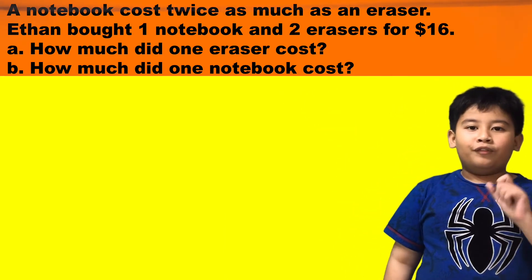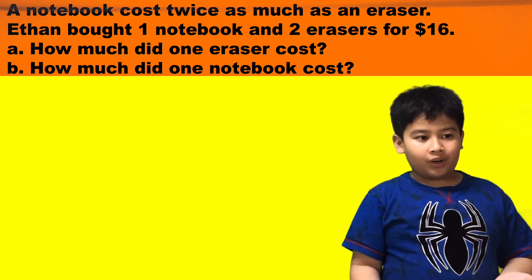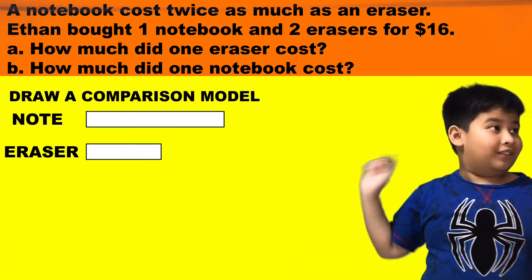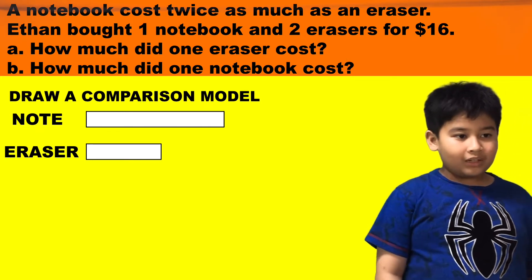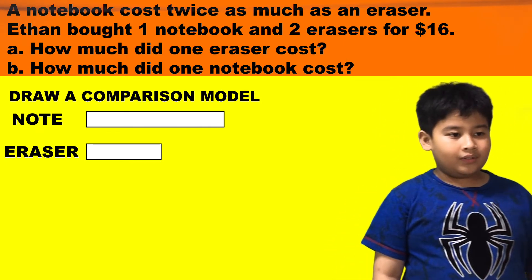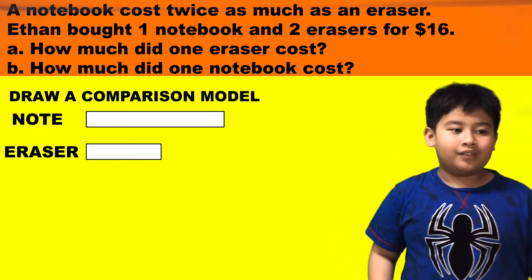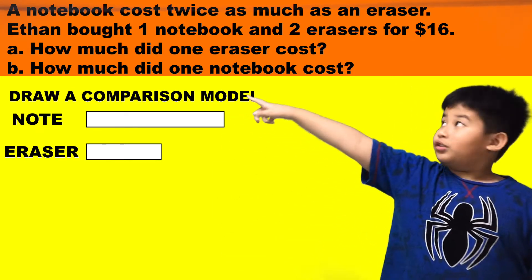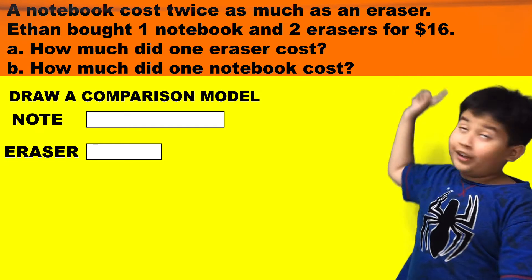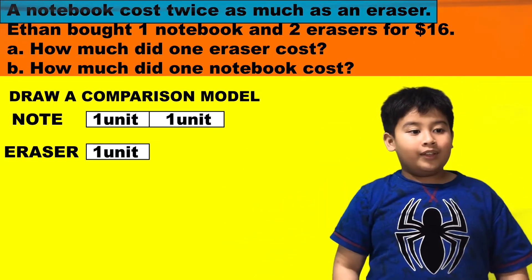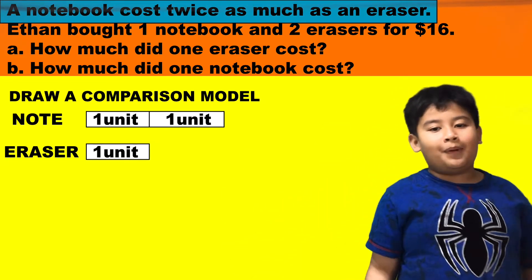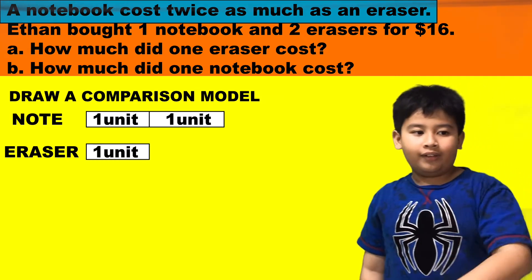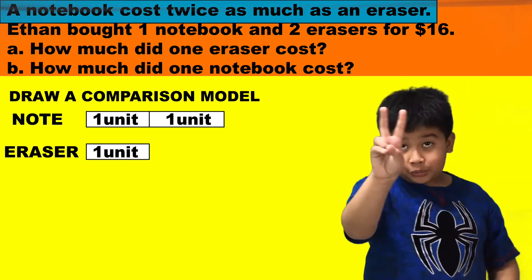So the first step is to draw a comparison model for notebook and eraser. A notebook costs twice as much as an eraser, meaning it's a times relationship. So do the same as before — eraser is one unit, and notebook is two units.